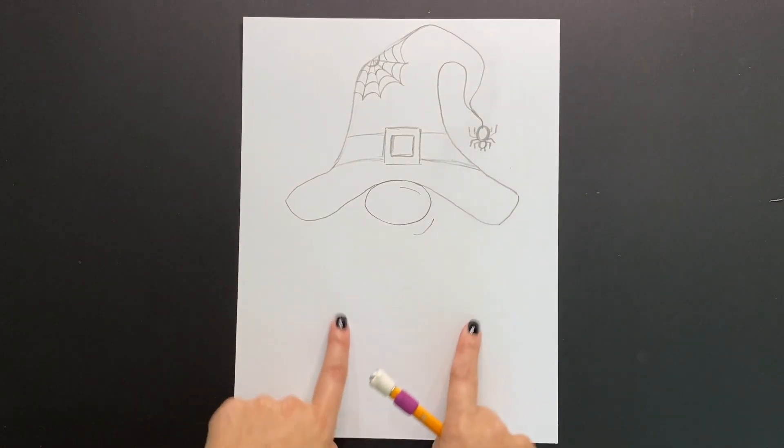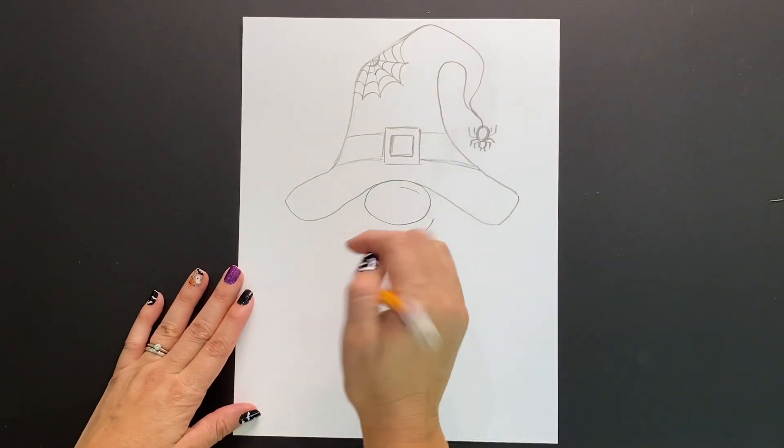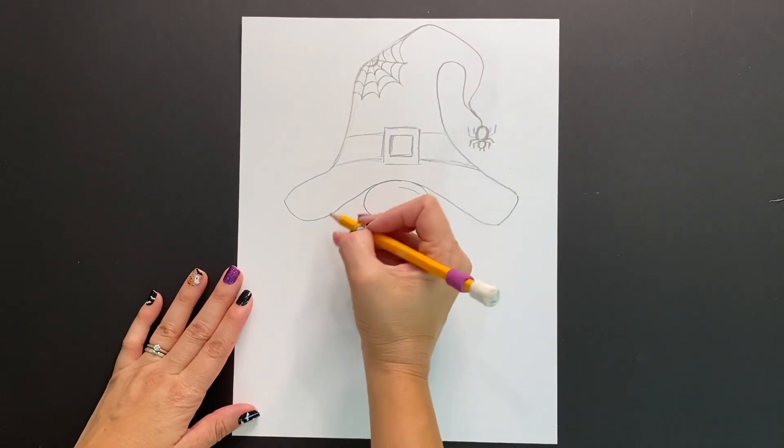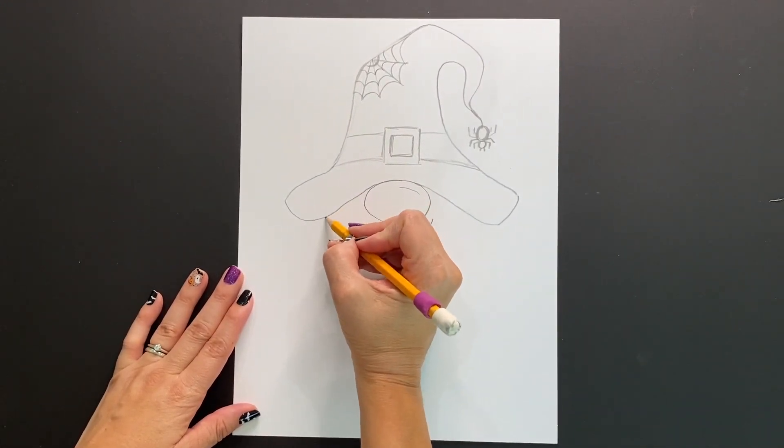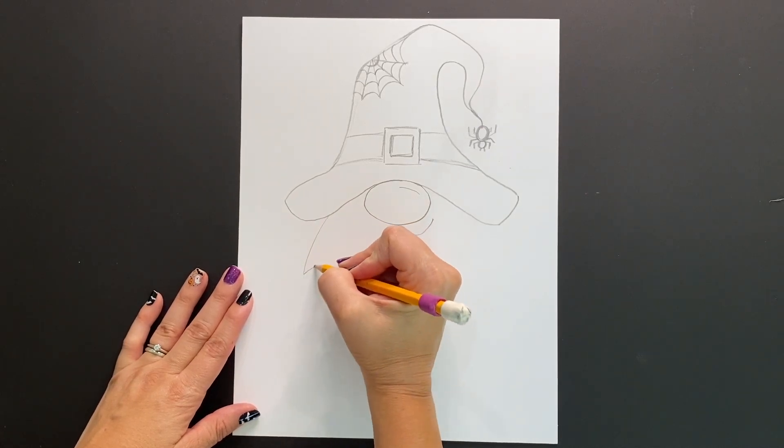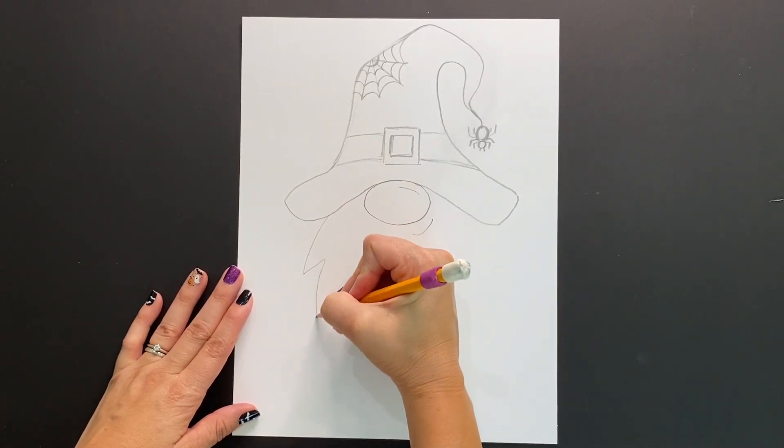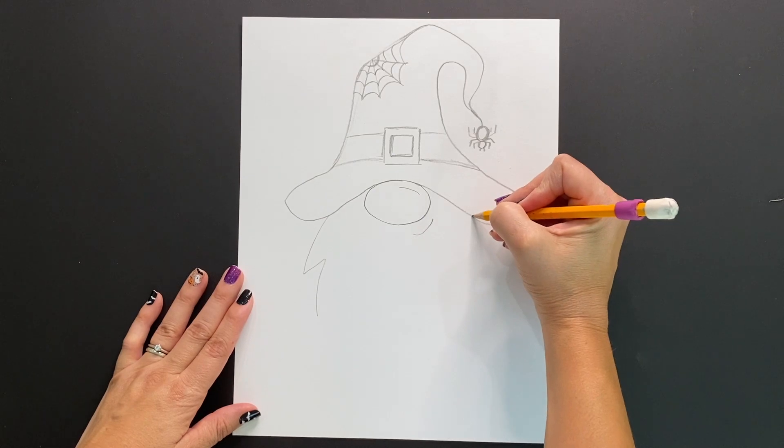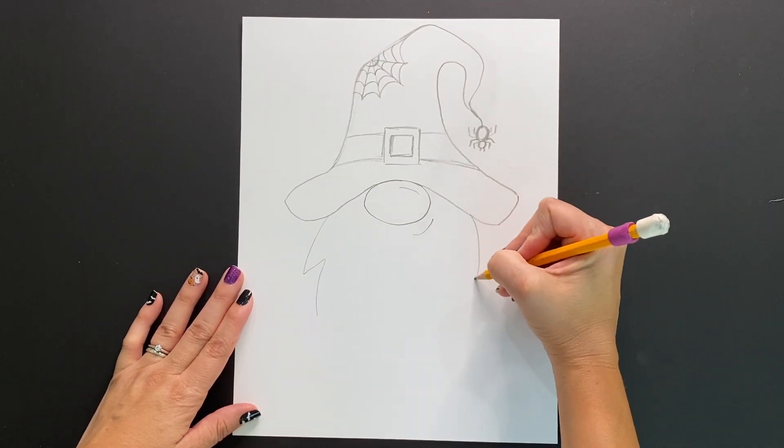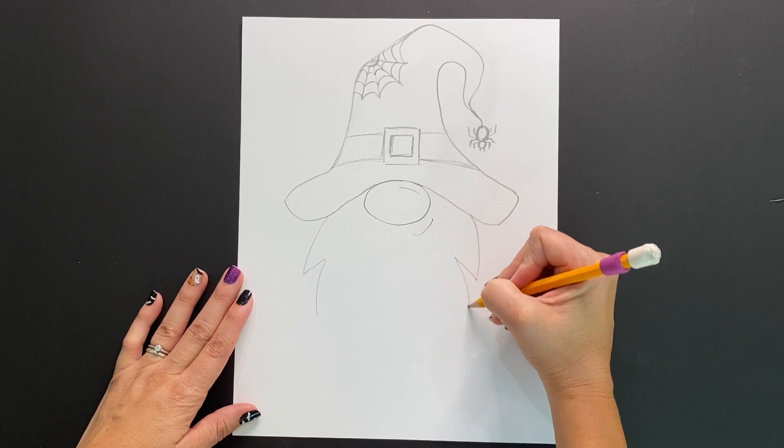Next, it's time to begin drawing our gnome's beard. So on the left hand side coming from the top of my hat, I'm going to just draw a very simple zigzag line. And then going to do the exact same thing on the right hand side by just creating another little zigzag line.